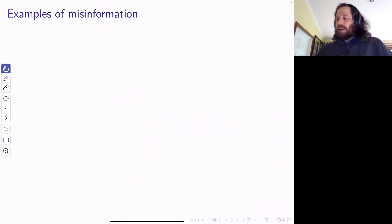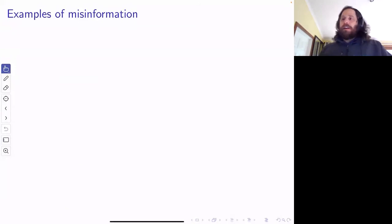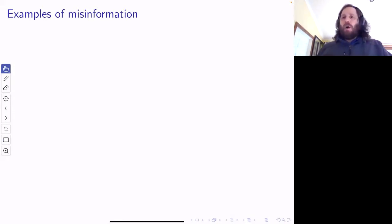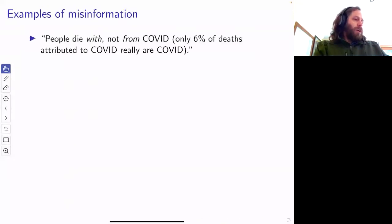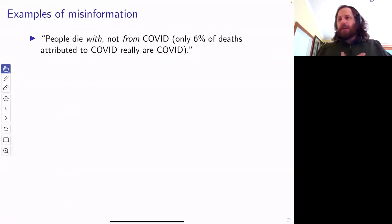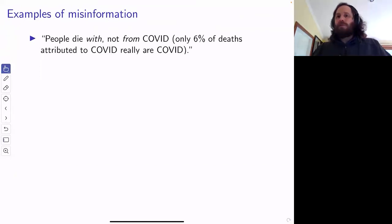Examples of misinformation — a lot of you have seen some by now. You've seen stuff about how severe the disease is, whether or not the vaccines work. So here are a bunch of examples of things I have seen. This is something that's been said since the start of the pandemic: people die with COVID, they don't die from COVID. They have COVID when they die and therefore they're being recorded as a COVID death — it's not real.